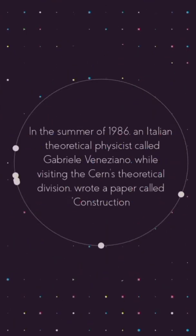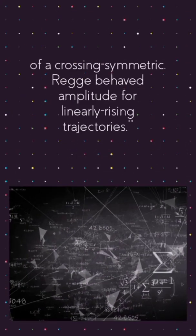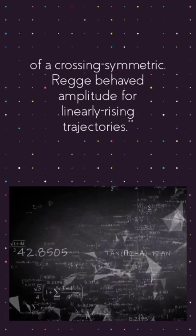In the summer of 1986, an Italian theoretical physicist called Gabriele Veneziano, while visiting the CERN's theoretical division, wrote a paper called Construction of a Crossing Symmetric Regge-behaved amplitude for linearly rising trajectories.